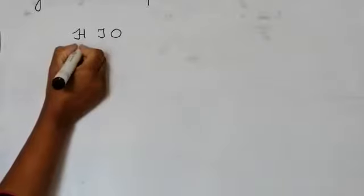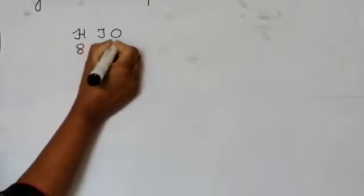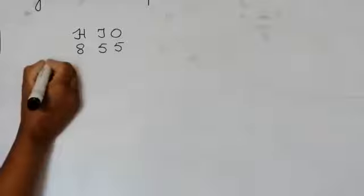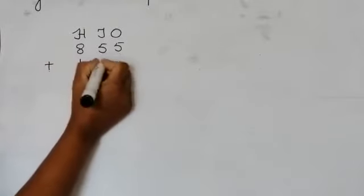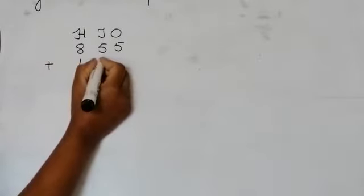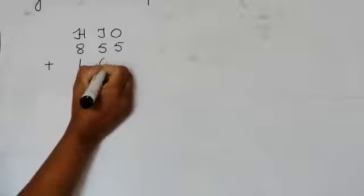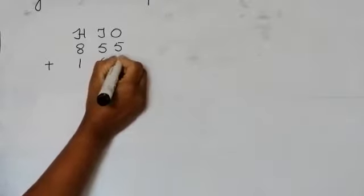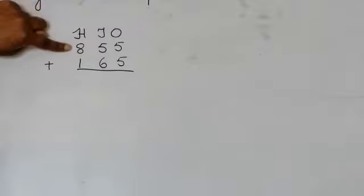Again the same thing — we put the place value first. So 800, 5 tens, 5 ones plus 100, 6 tens, 5 ones. We say the number: 855 plus 165. Or if we say as a place value: 800, 5 tens, 5 ones plus 100, 6 tens, 5 ones.